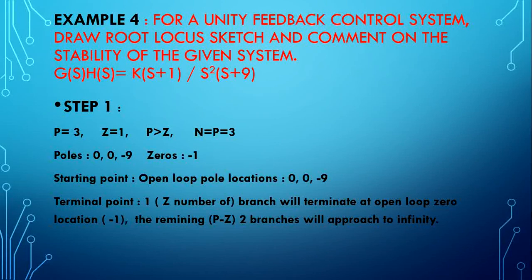The first example — the continuation of the previous video — this is the fourth example. For the given unity feedback system, the transfer function is K(s+1) divided by s² (s+9). For this, draw the root locus sketch and determine the stability.